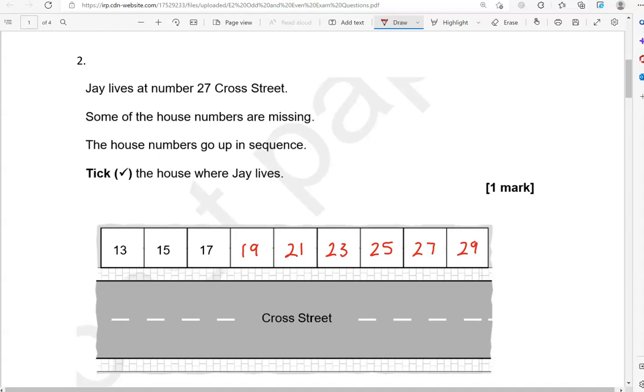Again, if you struggle with this, you can put the numbers that come right after here in the middle. So 13 and then you can put 14 here to help you remember. Then 15, 16, 17, 18, 20 and so on. However, it's good practice to know how to count in twos. We've got to tick the house where Jay lives and that is number 27. So that is this one here.